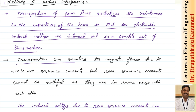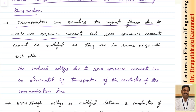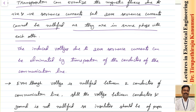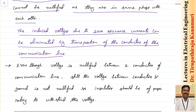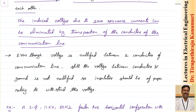Transposition can also equalize the magnetic fluxes due to positive and negative sequence currents — this is for the magnetostatic effect discussed in the last class. However, zero sequence currents cannot be nullified by transposing the power lines, because zero sequence currents are in phase with each other. The induced voltages due to zero sequence current can be eliminated by transposition of the communication line conductors instead — in a loop they will cancel out.